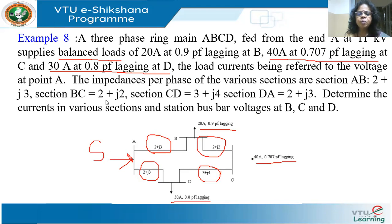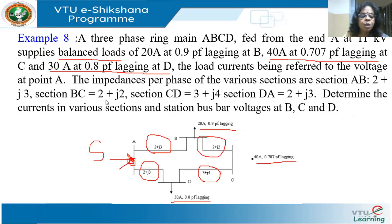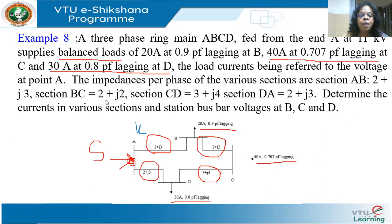Let the current in section AB be X+jY. This current enters B and leaves B, so I can apply KCL at B and find out the current in BC. I can apply KCL at each node and find all the currents as expressions. I find only expressions because I don't know what X+jY is yet.